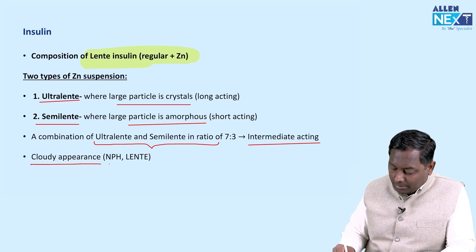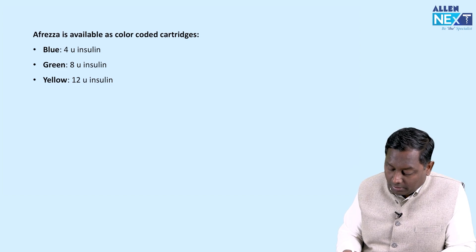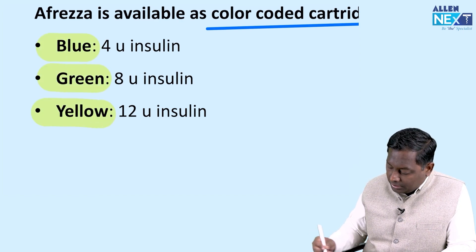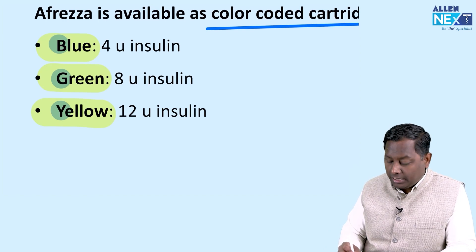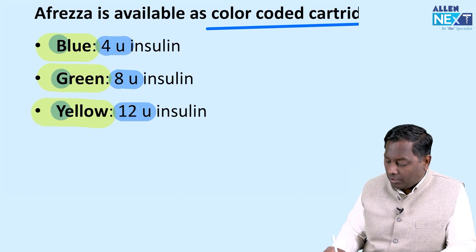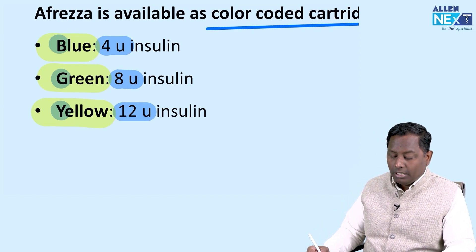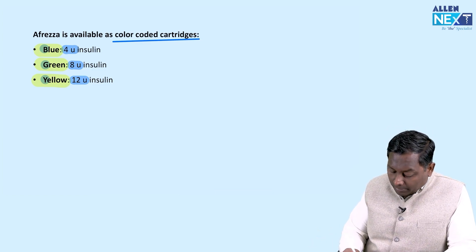NPH and Lente insulins have a cloudy appearance due to their zinc suspension. For Afreza color coding: Blue contains 4 units, Green contains 8 units, and Yellow contains 12 units. Remember this with the mnemonic BGY — Blue, Green, Yellow — corresponding to 4, 8, and 12 units respectively.